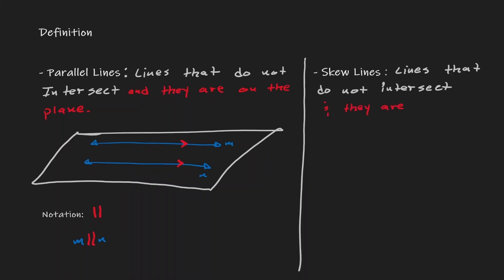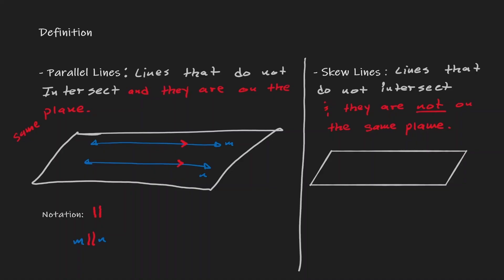Skew lines do not intersect and they are not on the same plane. If I draw a plane, draw line M within it, and then draw another line N that is not on the same plane — perhaps right underneath it — notice that these two lines are not going to be intersecting each other. They do look parallel, but they are on a different plane. In that scenario, we say these two lines are skewed instead of parallel.